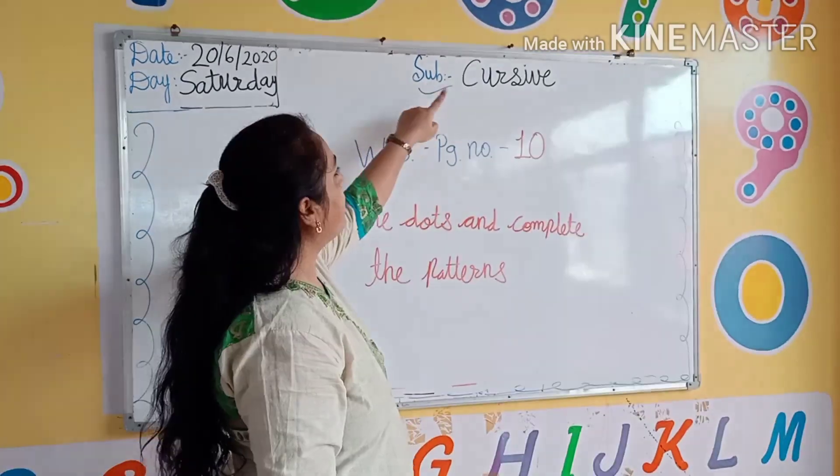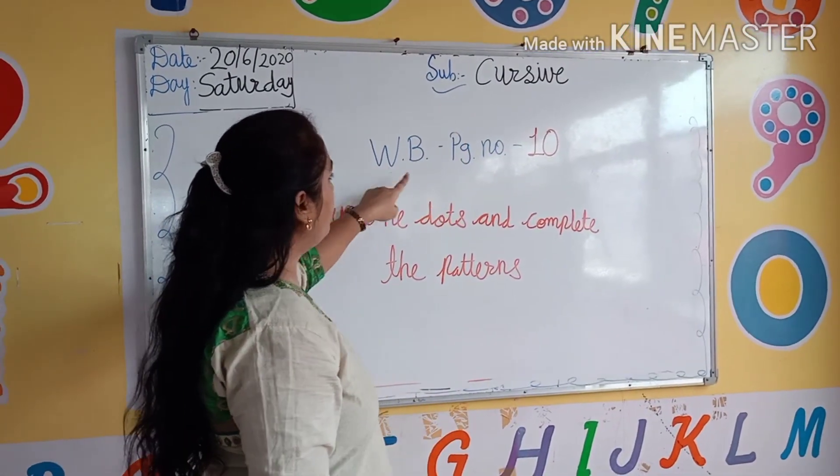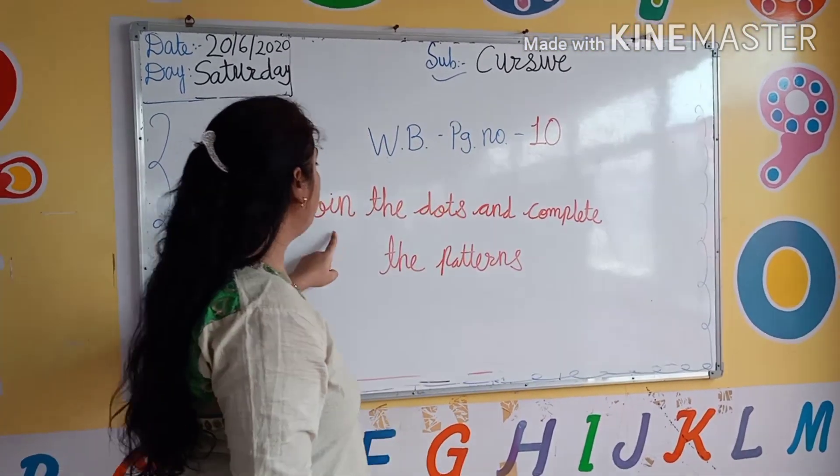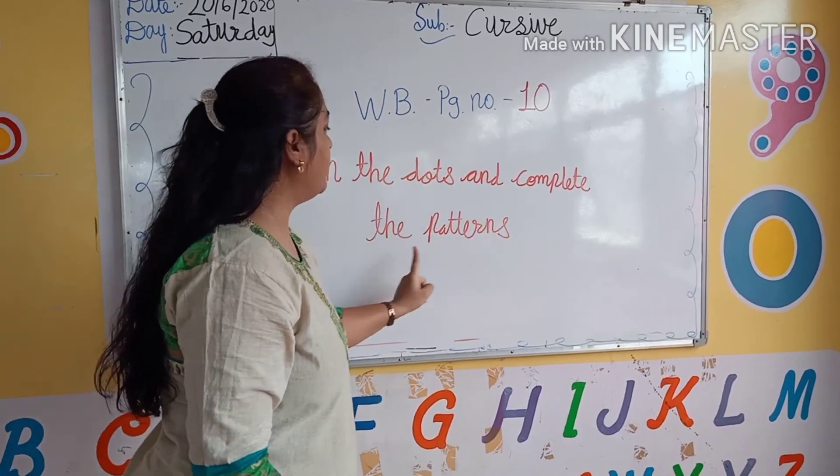So kids, our next subject is cursive word book page number 10. Join the dots and complete the patterns.